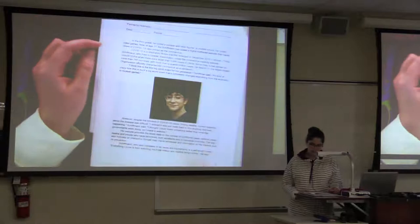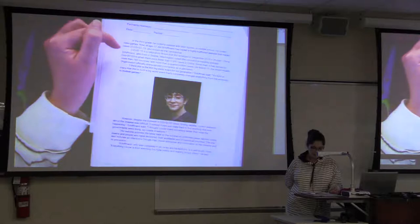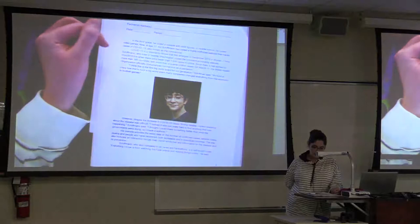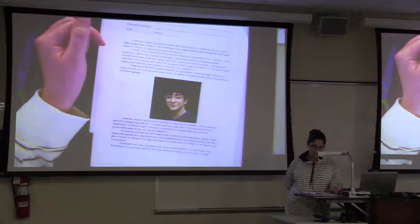A 17-year-old creates coronavirus tracking website and has over 40 million views. And this is the picture of that tracking website. In the third grade, he coded a website with stick figures. In middle school, he coded video games. Now at age 17, Avi Schiffman has coded a highly trafficked website that tracks cases of COVID-19, also known as the coronavirus. COVID-19 is a respiratory illness that first emerged in December 2019 in Wuhan, China.